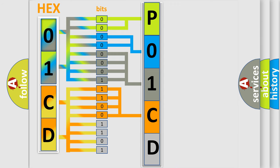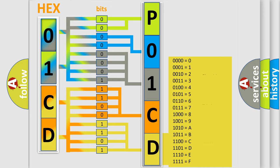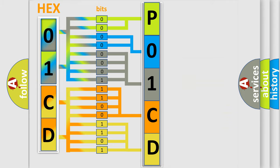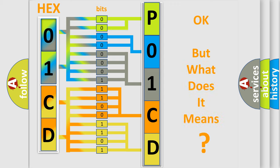A single byte conceals 256 possible combinations. We now know in what way the diagnostic tool translates the received information into a more comprehensible format. The number itself does not make sense to us if we cannot assign information about what it actually expresses.